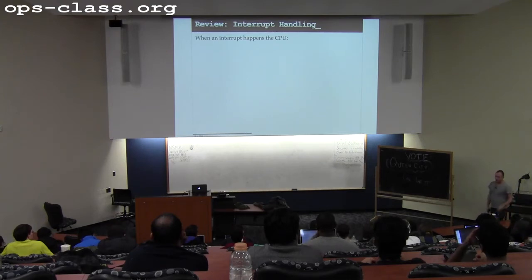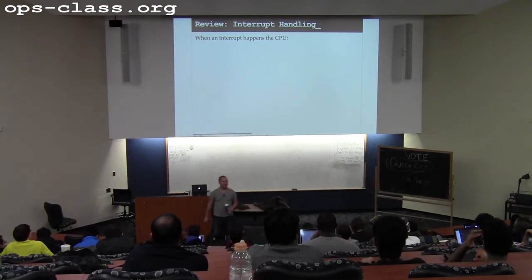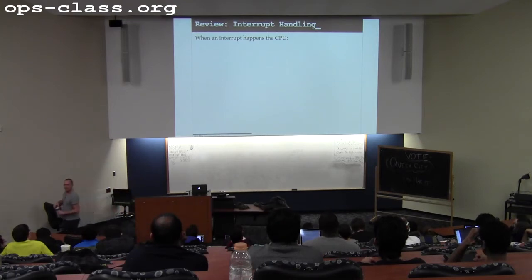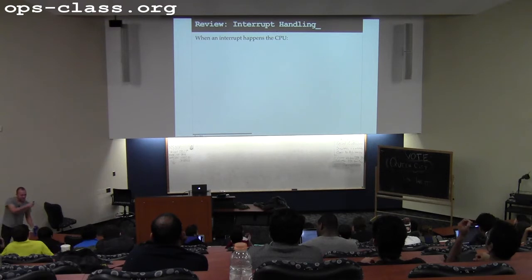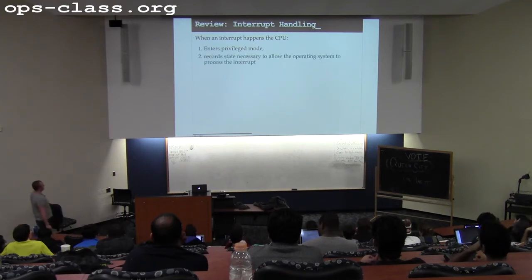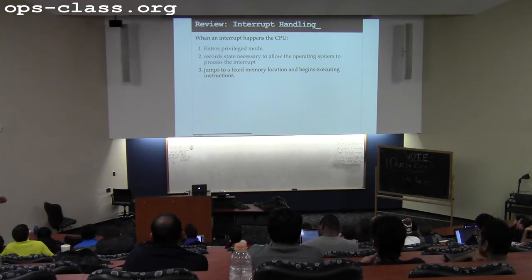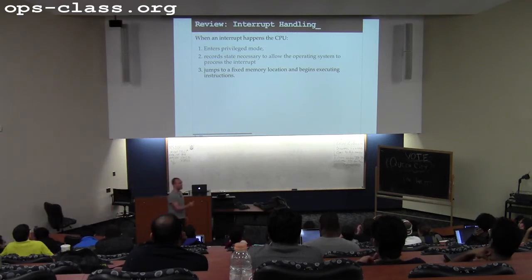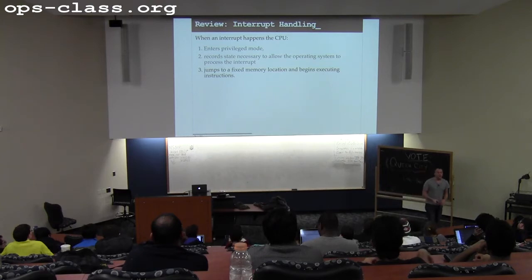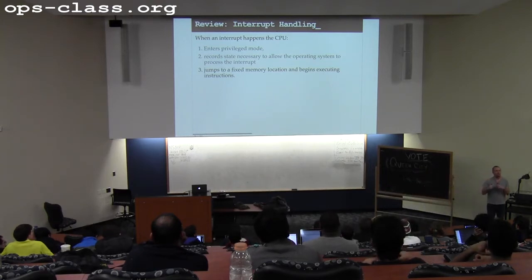Three things happen simultaneously when an interrupt or exception occurs: the processor enters privileged mode - this is hard-coded into the CPU; it records some state about the system; and then it starts executing at a particular location in memory. That location contains what's called an interrupt handler - the code that's run to handle an interrupt. That code is installed by the operating system during boot.